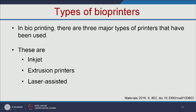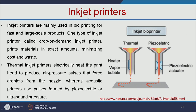There are three types of bioprinters: inkjet printers, extrusion printers, and laser-assisted bioprinters. Inkjet printers are mainly used in bioprinting for fast and large-scale products. A type called drop-on-demand prints materials in exact amounts, minimizing cost and waste. Inkjet bioprinters are divided into two types — thermal and piezoelectric. Thermal inkjet printers electrically heat the print head to produce air pressure pulses that force droplets from the nozzle. Acoustic printers use pulses formed by piezoelectric or ultrasound pressure to deposit cells on the particular biopaper.